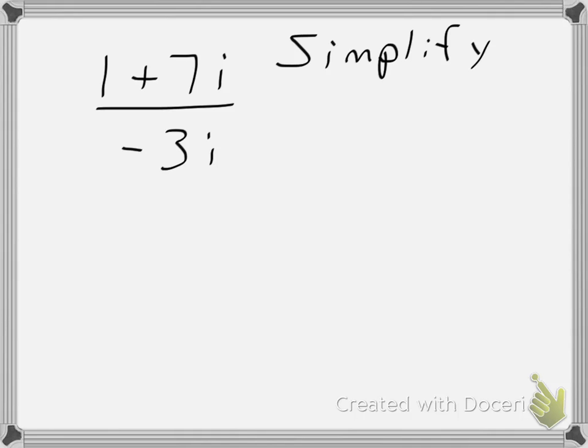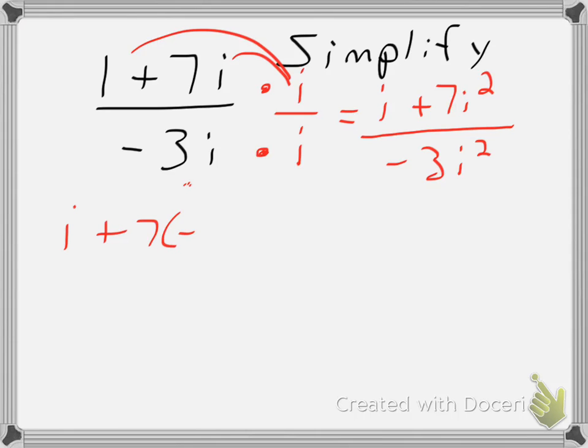Lastly, same kind of problem. All I observe is I have a single term in the denominator with an i. I'm going to automatically multiply by i to the numerator and denominator. My denominator, I have negative 3i squared. After distributing my i to both terms, I'll have i plus 7i squared. Again, making my substitution. i plus 7 times negative 1 over negative 3 times negative 1. And I'll make this i minus 7 over negative 3 times negative 1 becomes a positive 3.